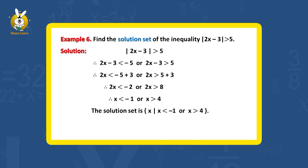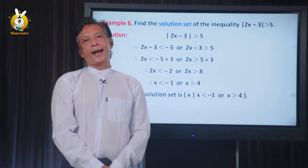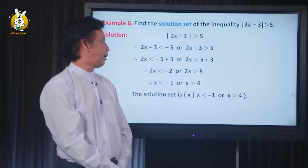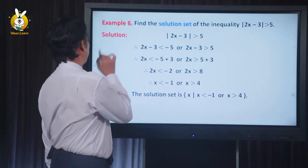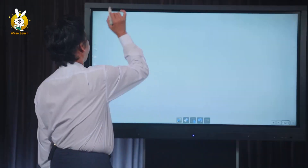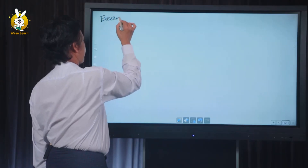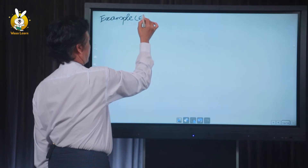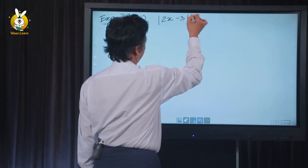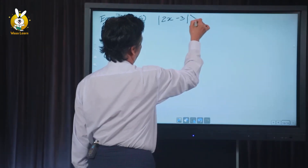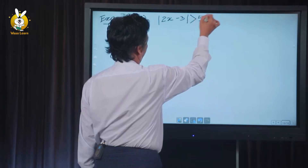Find the solution set of the inequality: modulus of 2a minus 3, greater than 5. Now let us work out the solution. We will use the formula. This is modulus of 2a minus 3 greater than 5.